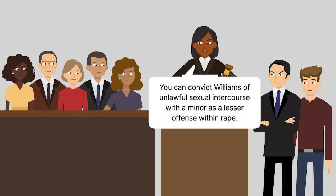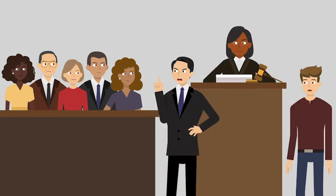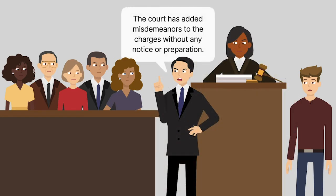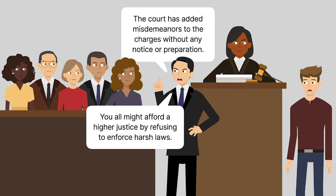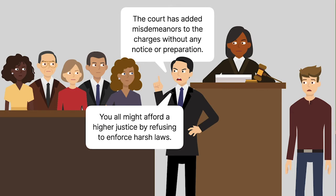At trial, the court instructed the jury that it could convict Williams of unlawful sexual intercourse with a minor as a lesser offense included within the offense of rape. At closing arguments, Williams' attorney complained that the court had added misdemeanors to the charges against Williams without any notice or preparation. He argued that a jury might afford a higher justice by refusing to enforce harsh laws.